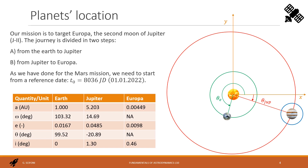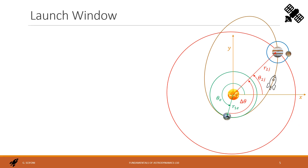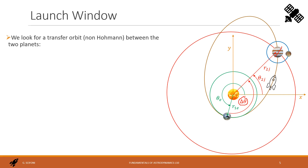The only parameter changing with time is the anomaly theta. The reference system is heliocentric, as for the Mars mission. First of all, we look for a transfer orbit between the Earth and Jupiter. This orbit won't be Hohmann type, since we want to be quicker, so we must choose an angle delta-theta when the probe is encountering Jupiter. Let's assume this angle to be 160 degrees.